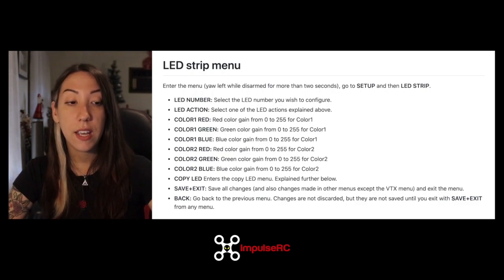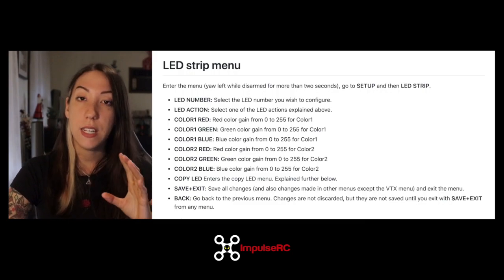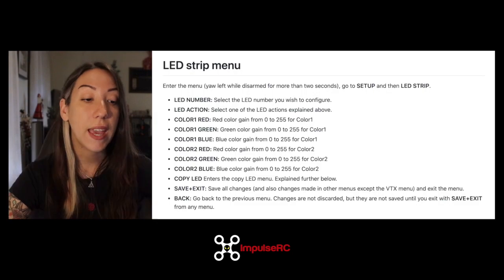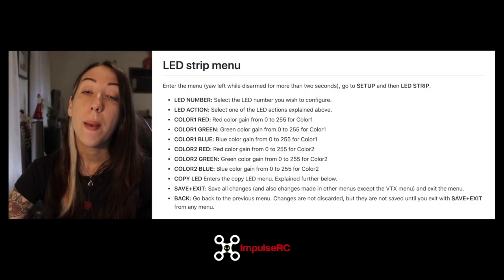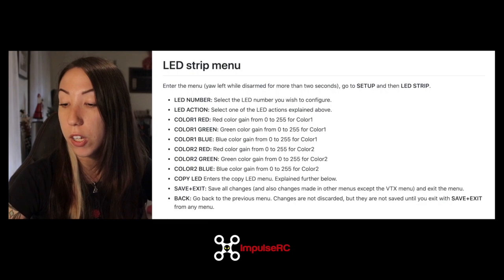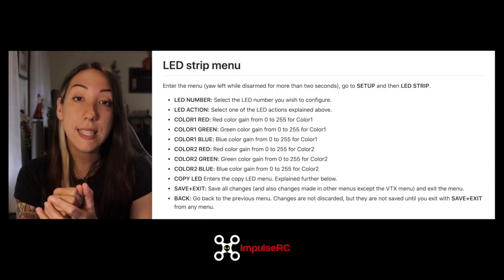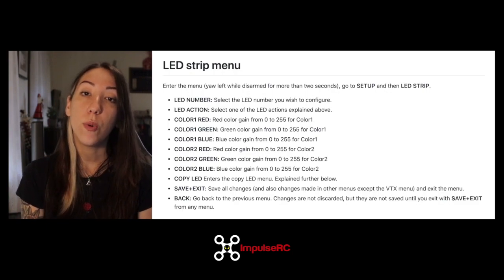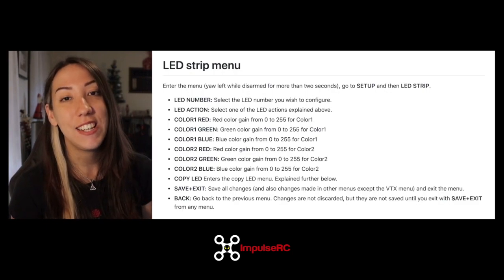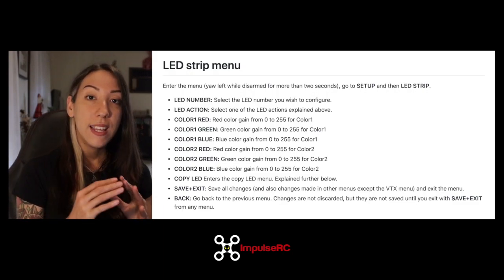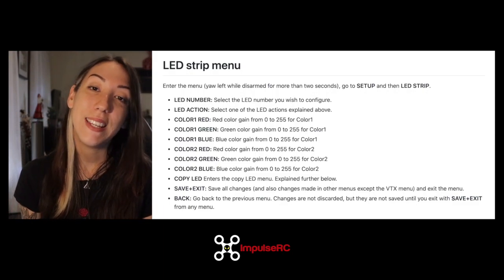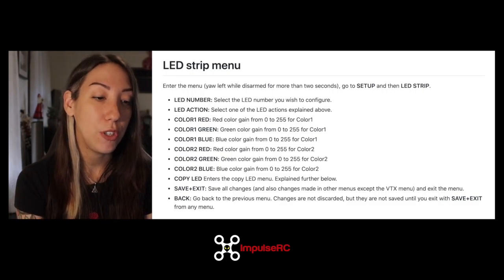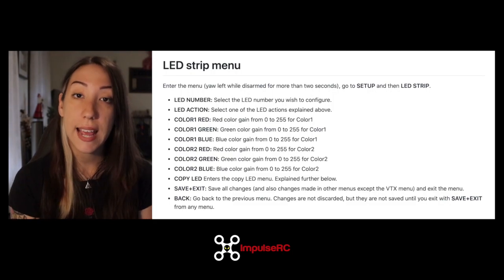The first thing you will see on your LED menu is the LED number — this is the number of the LED you are wishing to configure. The second option is the LED action. By default, when you plug in your LEDs for the first time, they're most likely to be configured to night mode, which is in reference to the 80s series Night Rider. If you don't know what I'm talking about, simply Google it or YouTube it, and you'll see why this mode is called Night Rider. Besides this mode, we have other actions that the LED can do.